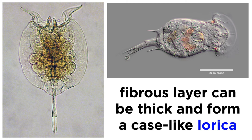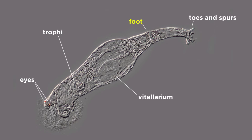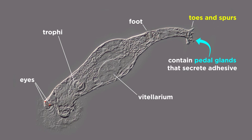All rotifers have a fibrous layer that can be quite thick in some species, and forms a case-like lorica which is often arranged in plates or rings. The rotifer foot is generally narrower and usually ends in one to four toes, which are used in attachment to surfaces, since they contain pedal glands that secrete an adhesive material used by both creeping and sessile forms.